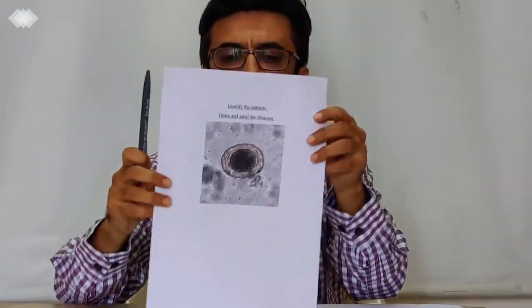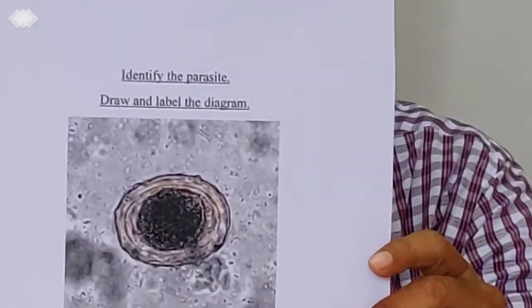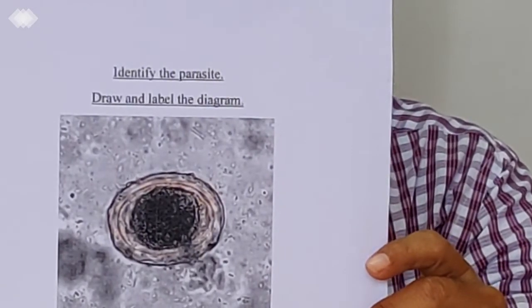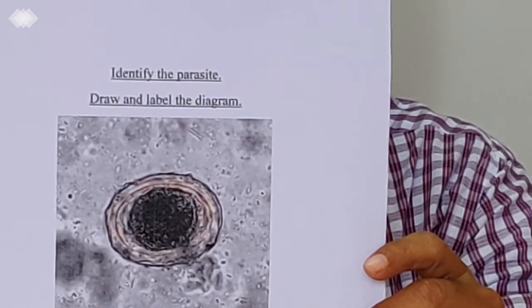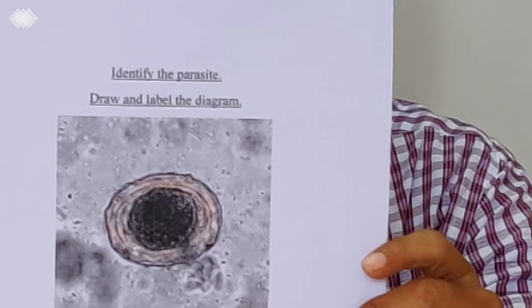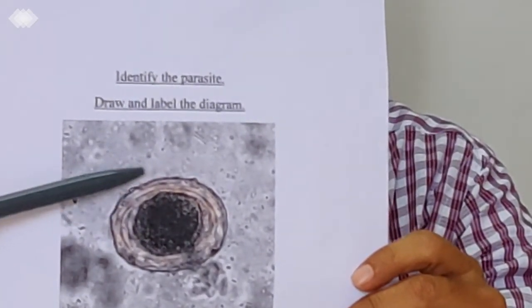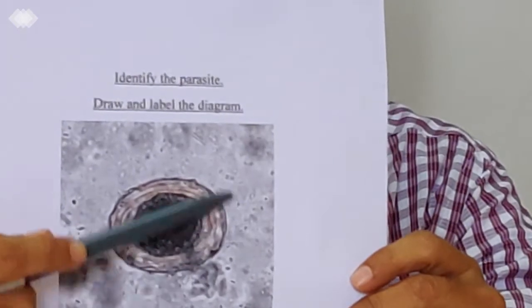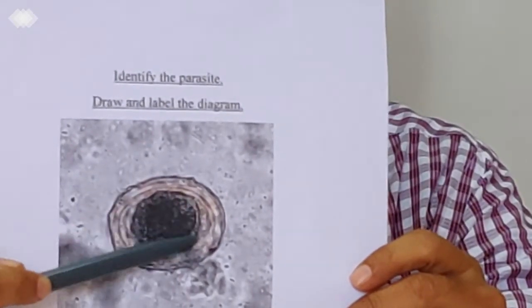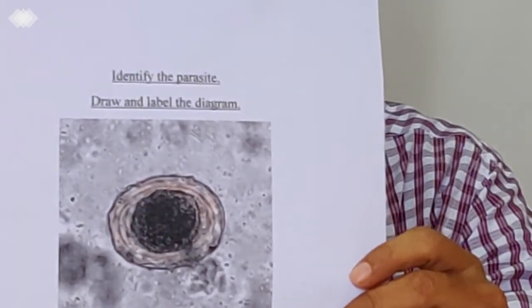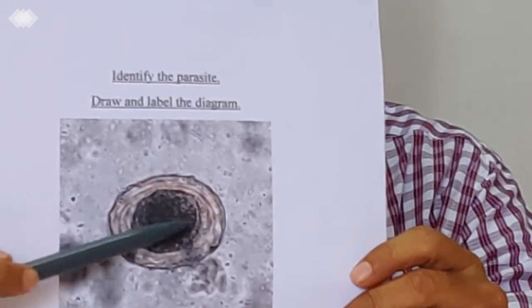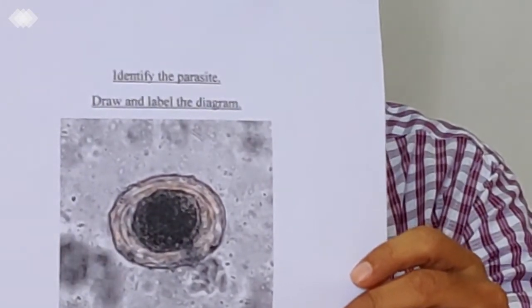If we see next egg, this is the egg of Ascaris lumbricoides, which is commonly seen in the stool preparation. There is a rough boundary. It is yellowish-brown in the color. And you can see, in a fertilized egg, you will see oval inside.